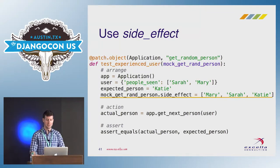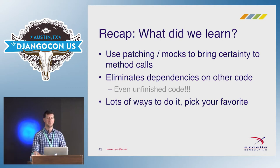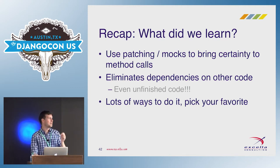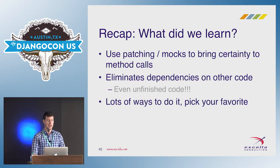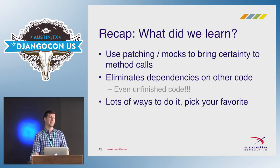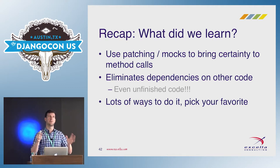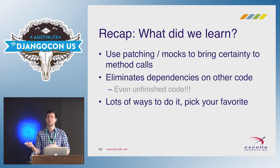Let's recap. We can use mocking and patching to bring certainty to all our dependent methods and eliminate those dependencies in the code — even if those dependencies are unfinished. Notice I didn't point out how getRandomPerson was implemented. That code could not even work, but I was still able to write unit tests for this. Also, lots of different ways to do it — pick your favorite. Some people prefer without decorators; some like the decorator style. In some cases one makes more sense, in other cases the other. It's up to your personal preference.